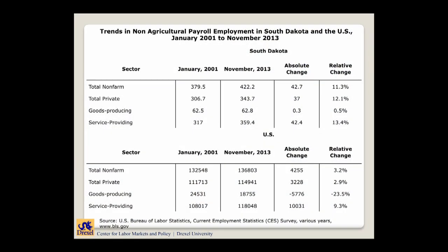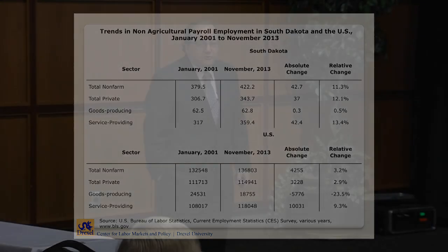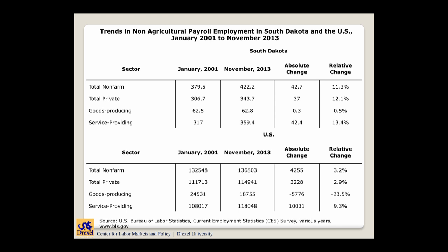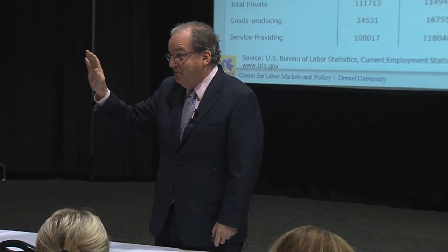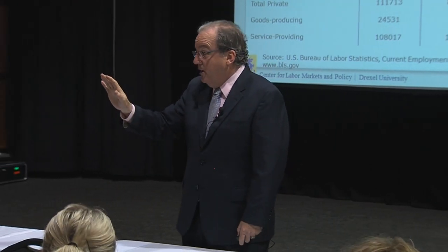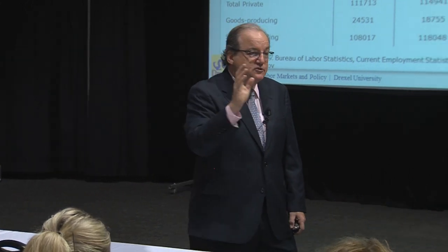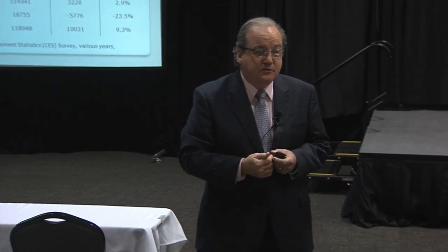The private sector did especially well here — up by 12% compared to only about 2.9% for the U.S. The big difference between South Dakota and the rest of the country is the goods-producing industries, largely manufacturing in the state. Manufacturing employment in the state was able to stay constant, which is a pretty unique situation — between January 2001 and 2013, the American economy lost 5.8 million manufacturing jobs. And I'm going to tell you right now, those jobs aren't coming back. They're largely gone because we've substituted capital for labor at very high rates.